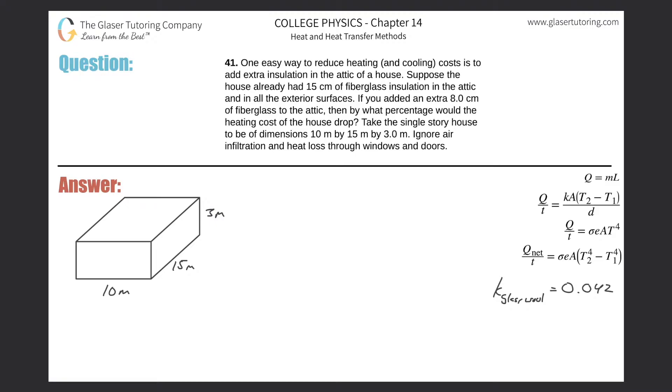Number 41. One easy way to reduce heating and cooling costs is to add extra insulation in the attic of a house. Suppose the house already has 15 centimeters of fiberglass insulation in the attic and in all exterior surfaces. If you added an extra eight centimeters of fiberglass to just the attic, then by what percentage would the heating cost of the house drop? Take the single story house to be such dimensions.